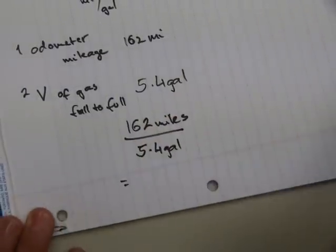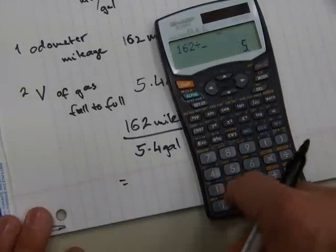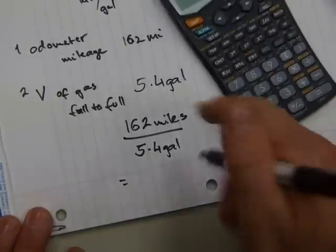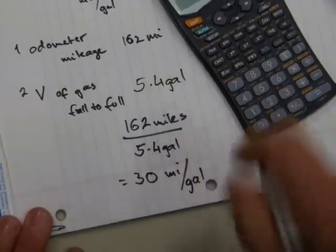Let's say, what does that equal to? 162 divided by 5.4 equals 30. So that's 30 miles per gallon.